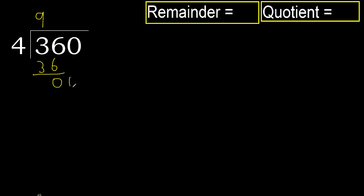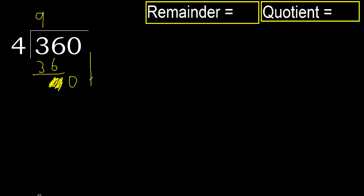Subtract 0. Eliminate 0 on this side. 0 is less, therefore next. That is not a number, therefore finish it.